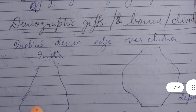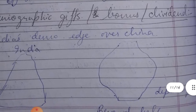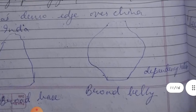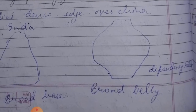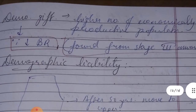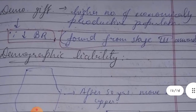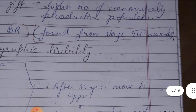Regarding the Demographic Gift, Bonus, or Dividend in India: India has a broad-base pyramid while China has a broad-belly type. The demographic gift refers to a high number of economically productive people. If there is a demographic gift with a less birth rate, this corresponds to Stage 3 in the demographic cycle.